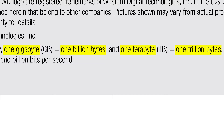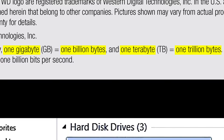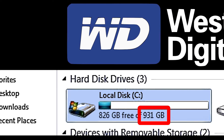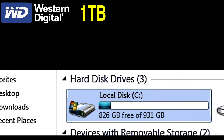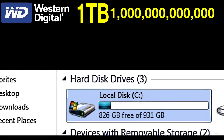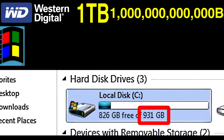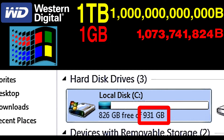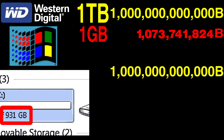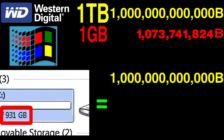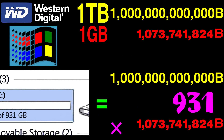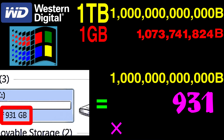So now you know why your 1 TB hard disk shows only 931 GB. The reason is that your hard disk manufacturer considers 1 TB to be a trillion bytes, whereas Windows considers 1 GB to be 2 to the power of 30 bytes. Hence, 1 trillion bytes is only about 931 of the GB that Windows is referring to.